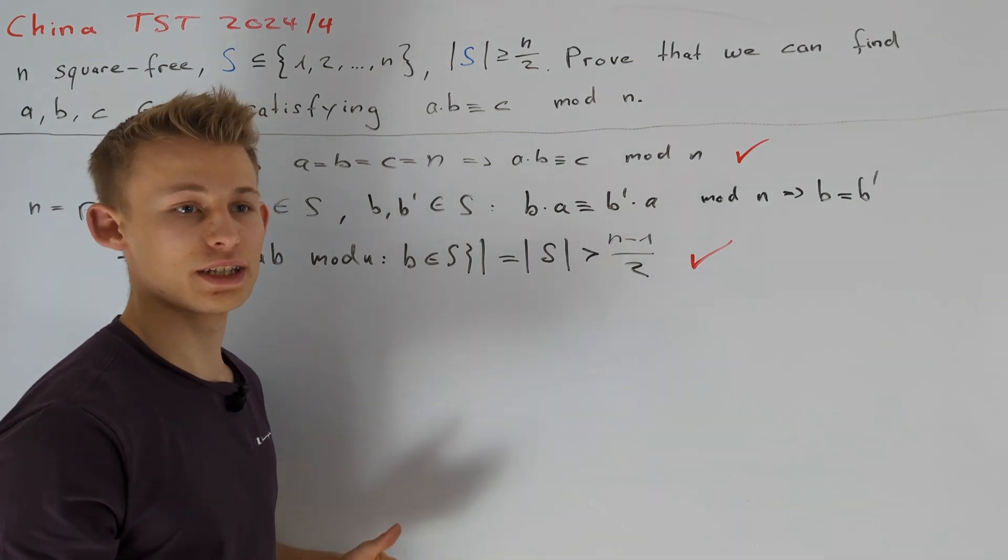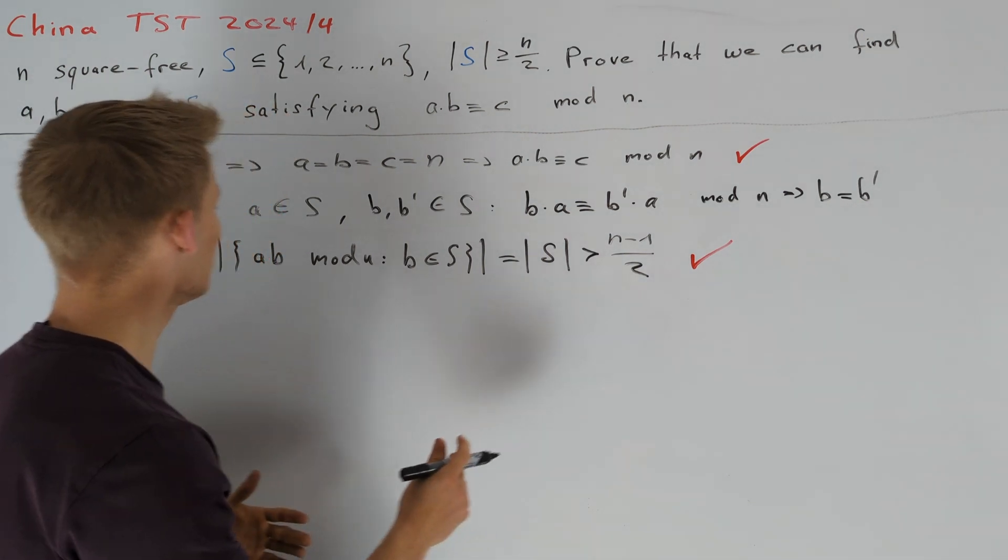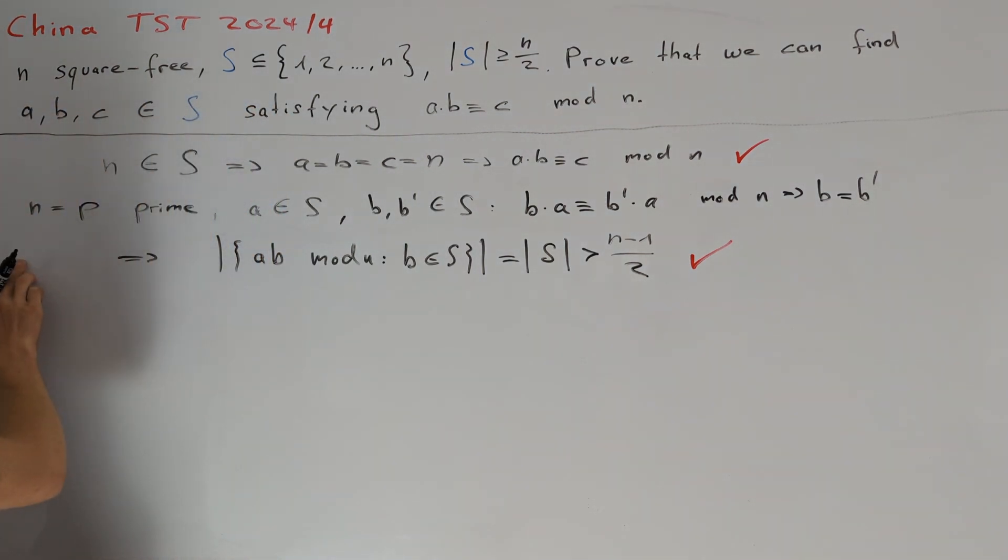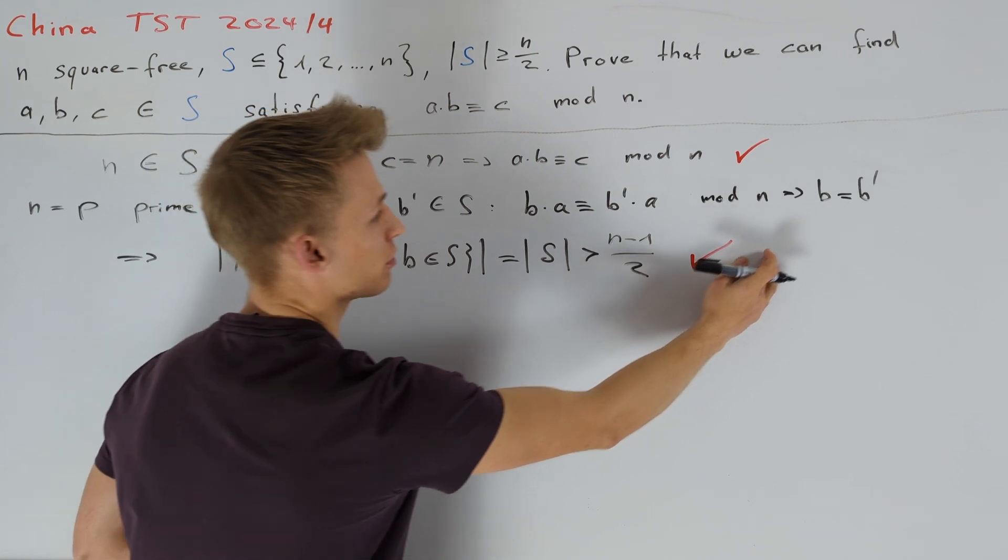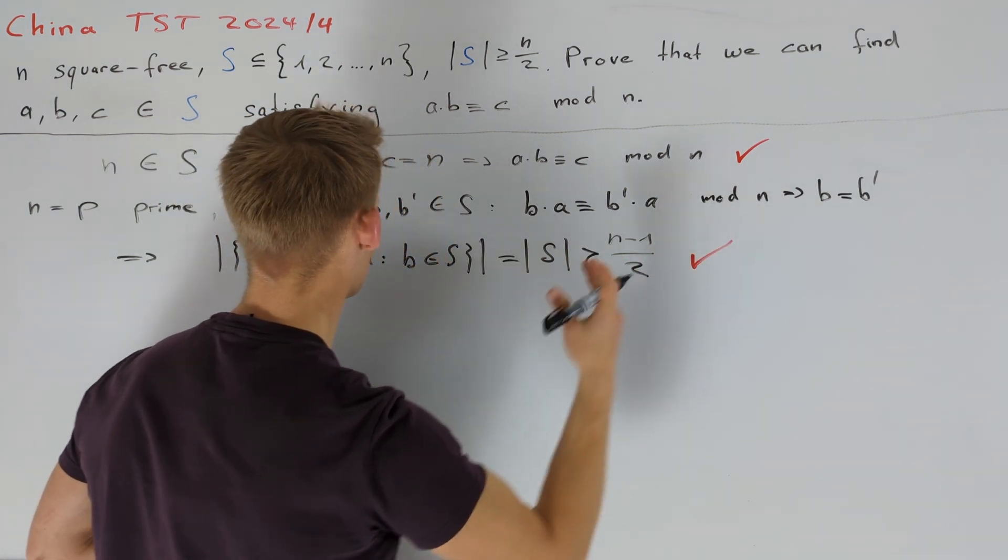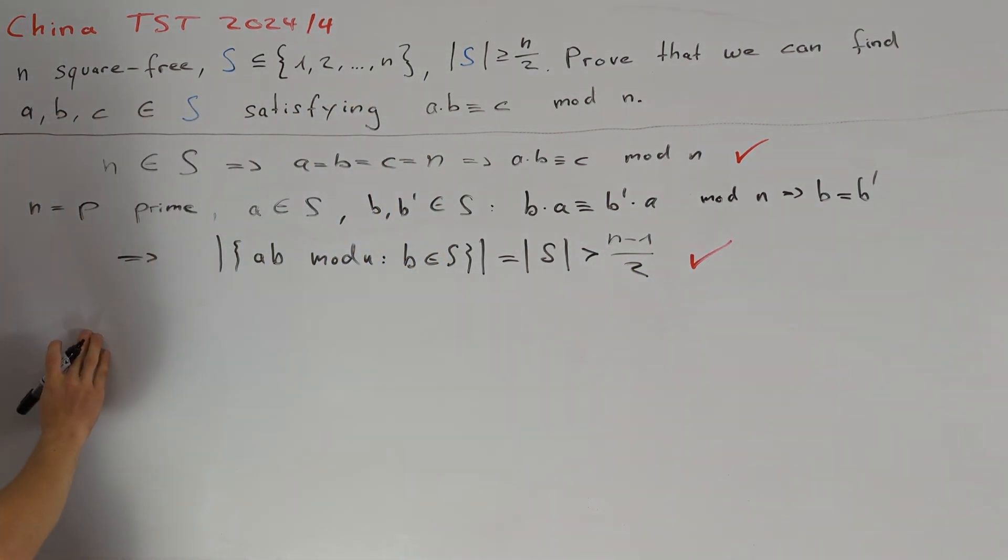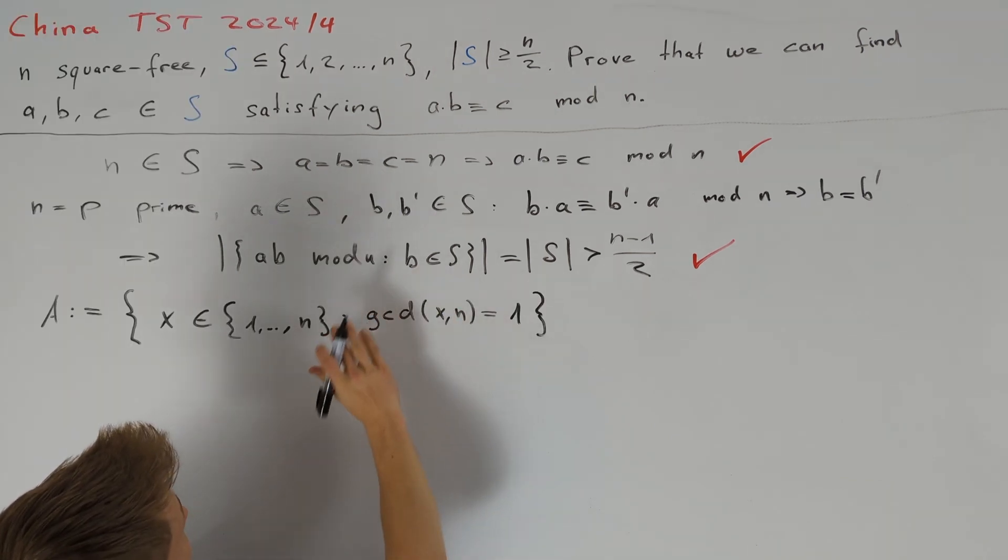Now we are ready to deal with the general case. And here we want to try to use this idea. The key step in this augmentation here was that from b times a congruent to b prime times a, we can follow that b equals b prime. And we want to try to do the same now. Unfortunately, this is not always possible in the general case. But we can at first restrict ourselves to the set A, which only contains the numbers co-prime to n. We get a similar result as above.